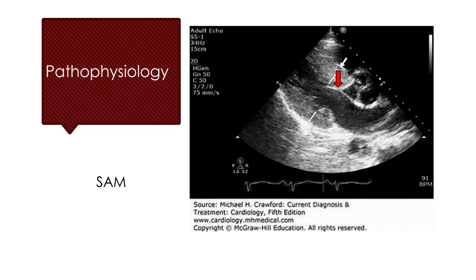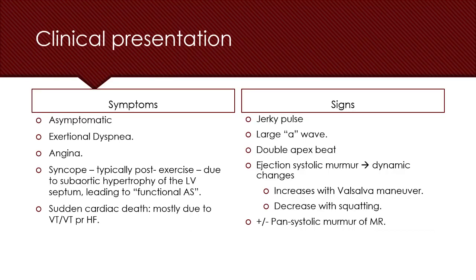Clinically speaking, patients with hypertrophic cardiomyopathy are frequently asymptomatic. Other symptoms include exertional dyspnea, angina, syncope typically after exercise, and sudden cardiac death that occurs mostly due to atrial fibrillation or ventricular tachycardia.